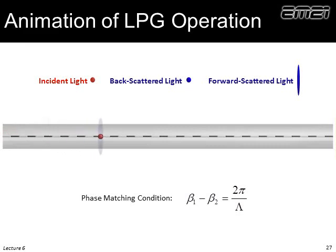Here's a movie of a long period grating in action. The red ball is a forward wave, and as it propagates it slowly spills energy out into the cladding mode. In principle, if the optical fiber were perfect, that energy in the cladding mode would couple back into the core. But in practice, because these fibers are not really designed to support those cladding modes well — the outside may have scratches, or bends — those cladding modes leak out and really don't go back into the core mode.